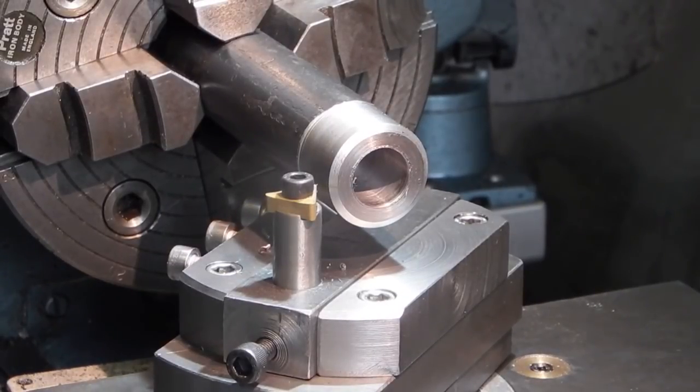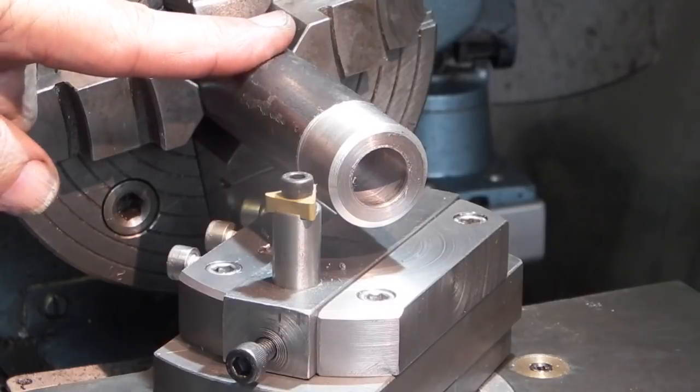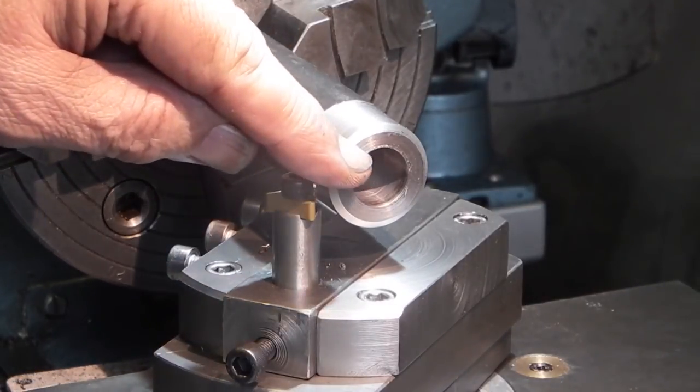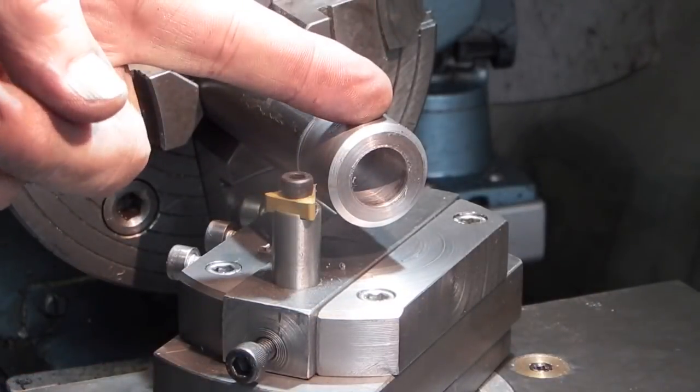First test of my ball turning fixture on steel. This is quite tough steel and what I'm doing is I'm making a spherical washer so I need a dome here and I'll part that off.